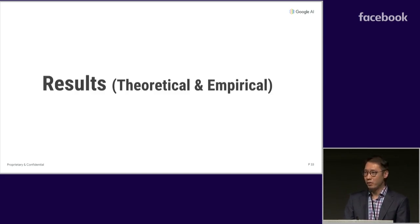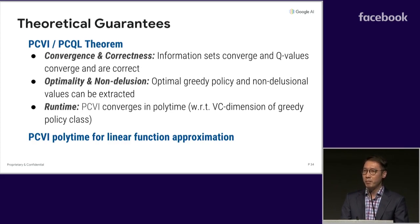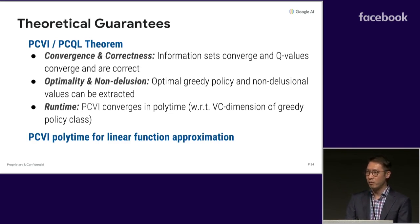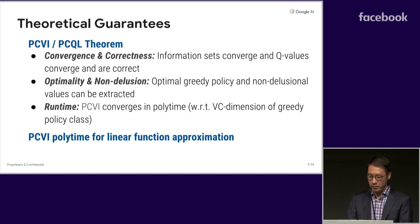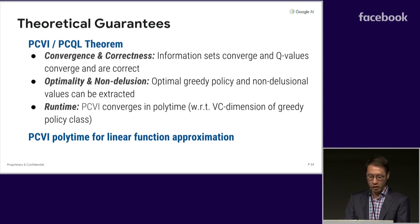So what can we say about these algorithms? Both PCVI and PCQL converge with respect to the information sets and the Q values contained in those sets. At convergence, we can easily extract the greedy optimal policy and its true value, and furthermore the information sets and Q values themselves are non-delusional. The number of information sets and feasibility checks is polynomial in the size of the MDP and depends on the VC dimension of the approximator class. For fixed architecture, we have polytime bounds. As a corollary, for a fixed dimensional linear function approximator, PCVI is polytime.